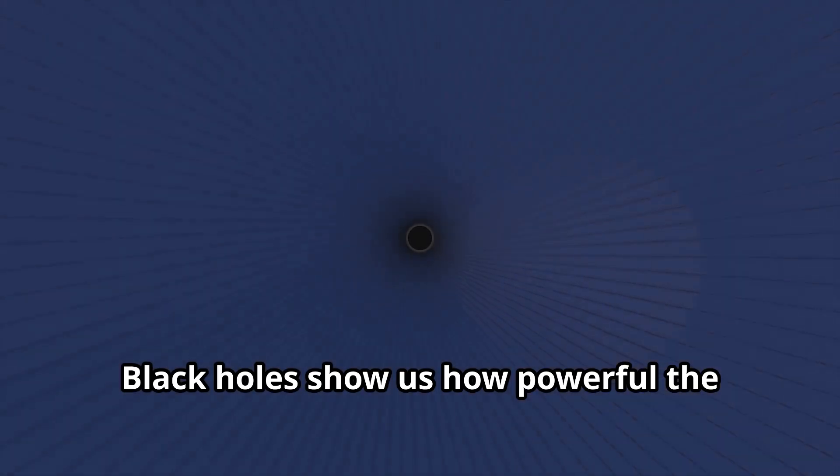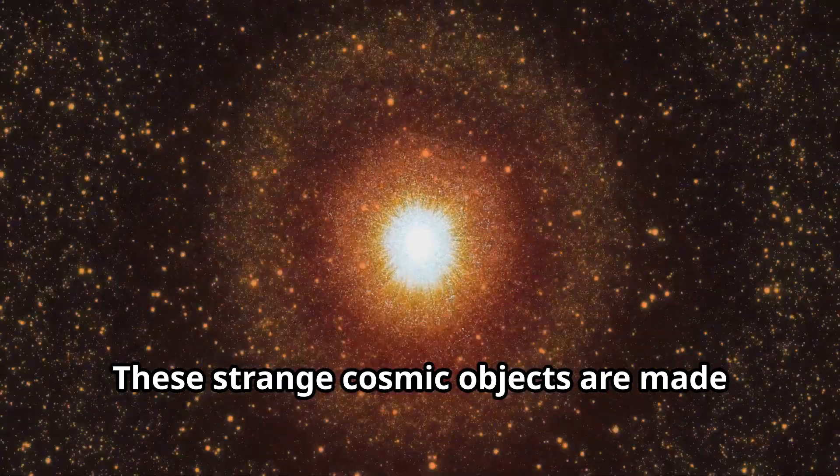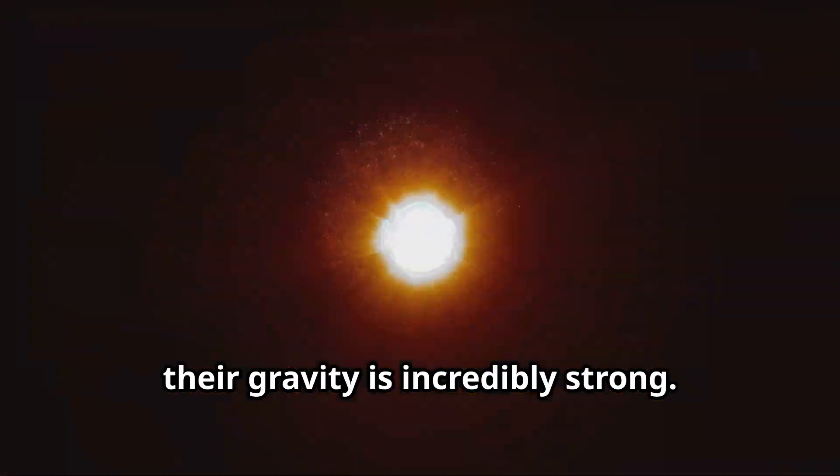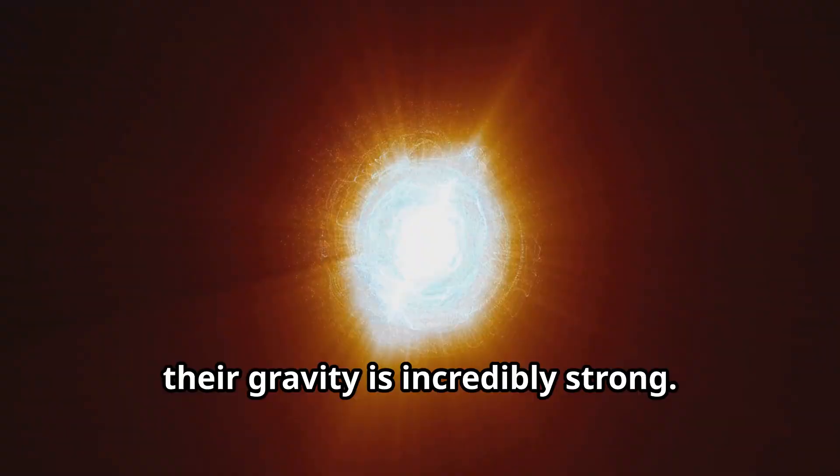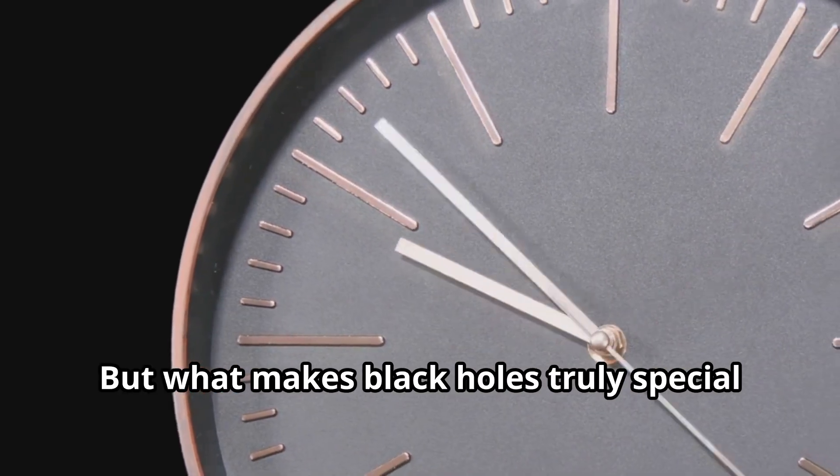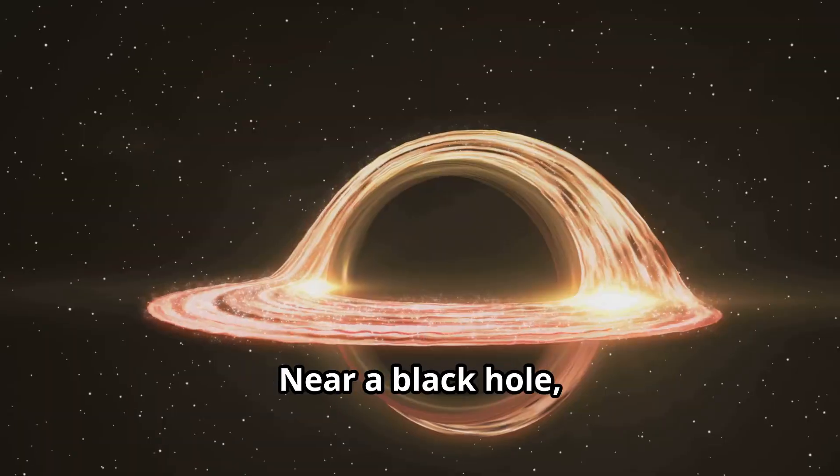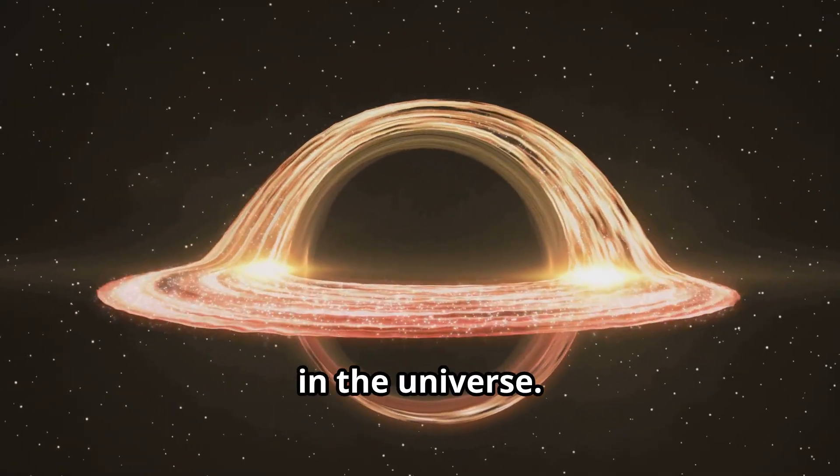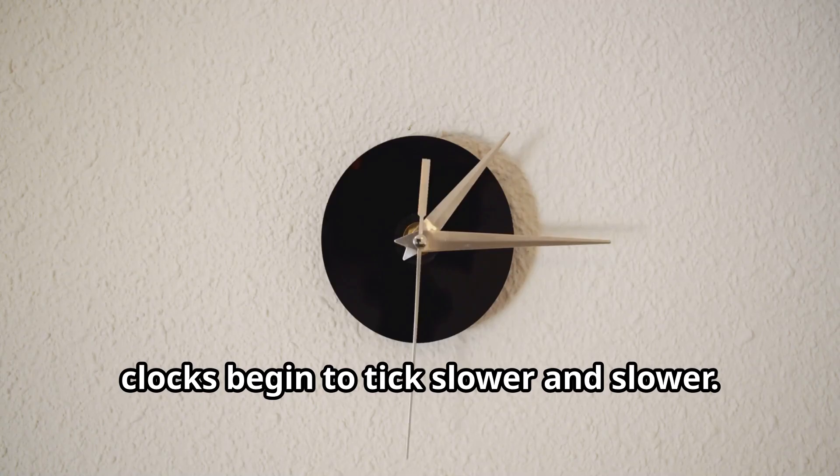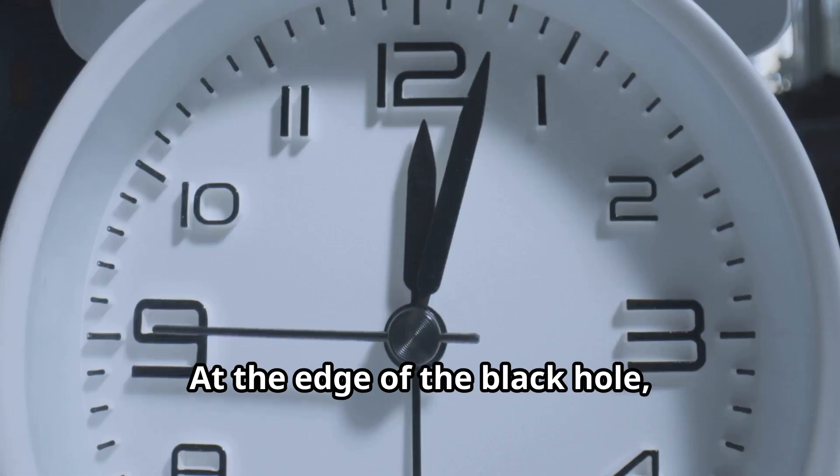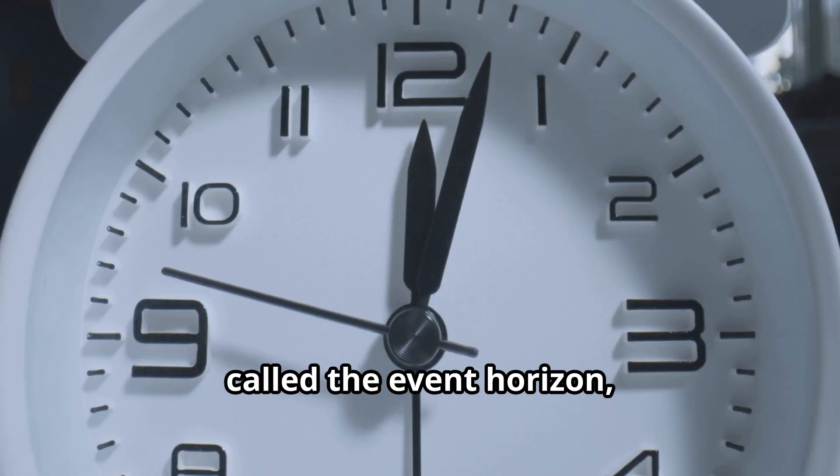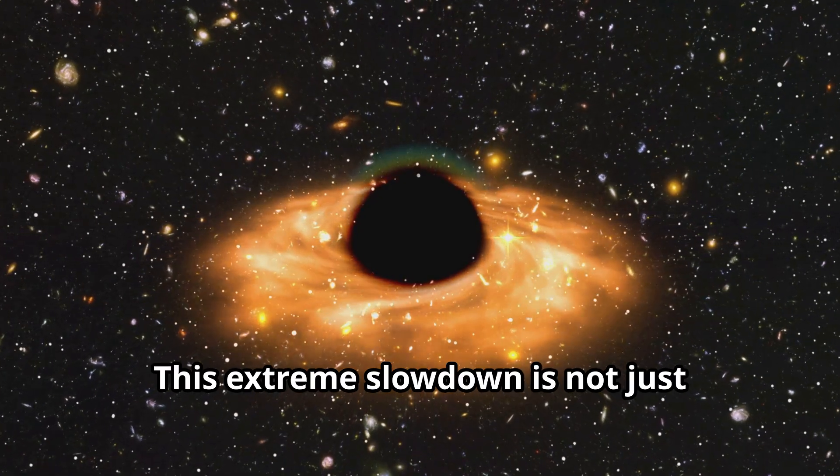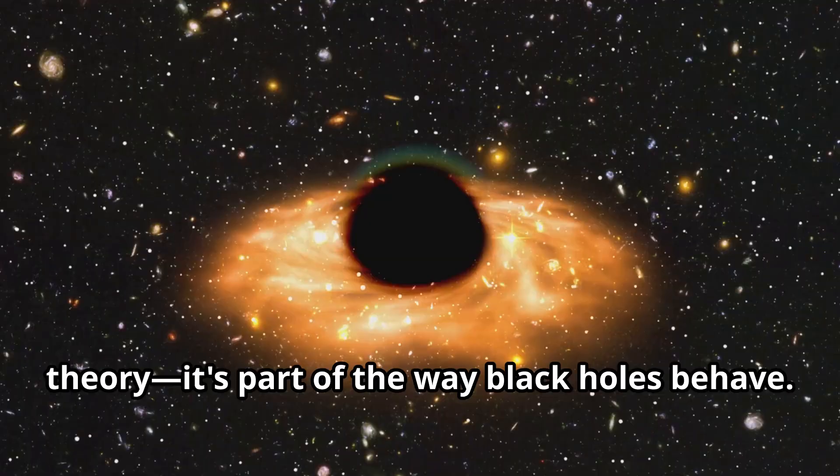Black holes show us how powerful the bending of time can be. These strange cosmic objects are made from collapsed stars that have become so dense, their gravity is incredibly strong. But what makes black holes truly special is how they affect time. Near a black hole, time slows down more than anywhere else in the universe. As you get closer to the black hole, clocks begin to tick slower and slower. At the edge of the black hole, called the event horizon, time nearly stops for an outside observer. This extreme slowdown is not just theory, it's part of the way black holes behave.